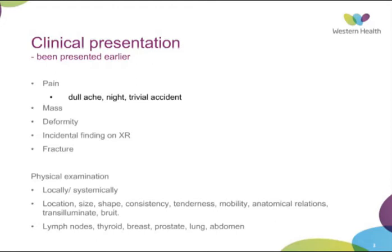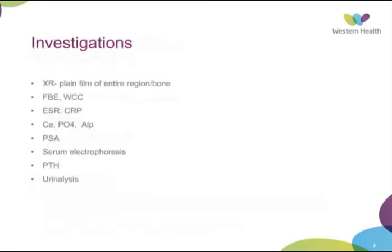Location — all the standard things you learn: location, size, and shape, consistency, tenderness, mobility, anatomical relations, and whether or not it transilluminates and has an identifiable bruit. Then the usual examinations such as lymph nodes and thyroid, breast exam, lung and abdomen.